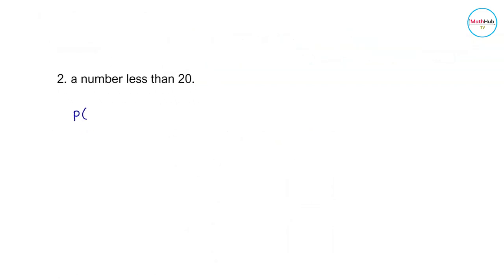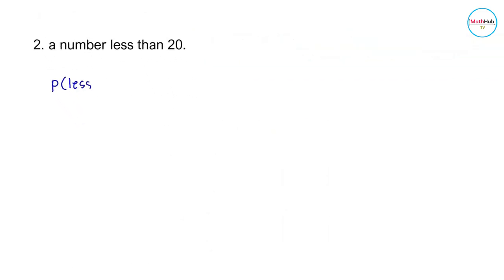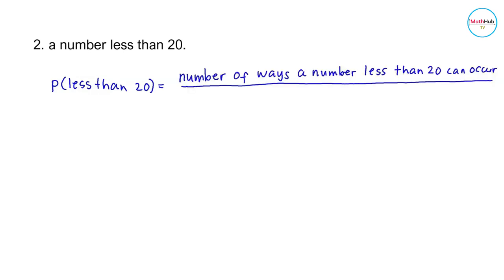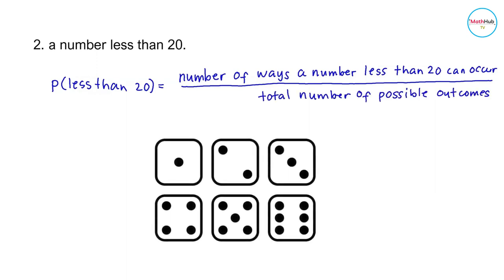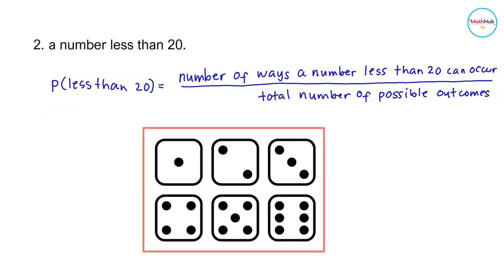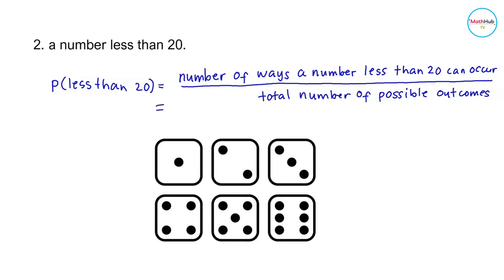Next, let's compute the probability of rolling a number less than 20. This is computed by dividing the number of ways a number less than 20 can occur by the total number of possible outcomes. From the set of equally likely outcomes, all of the numbers — 1, 2, 3, 4, 5, and 6 — are less than 20, so the numerator is 6. The total number of possible outcomes is also 6, so the probability of rolling a number less than 20 is equal to 1.